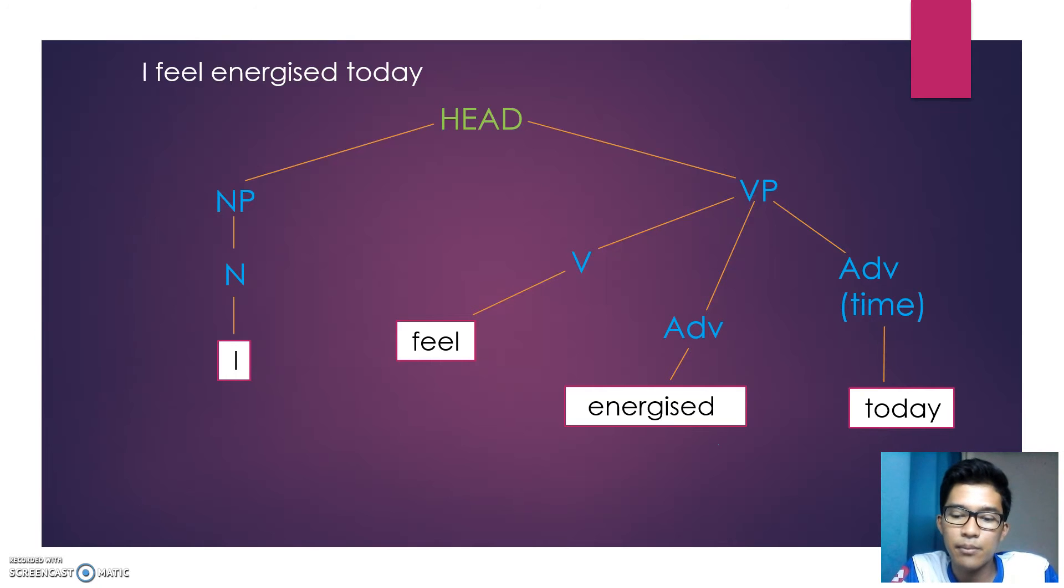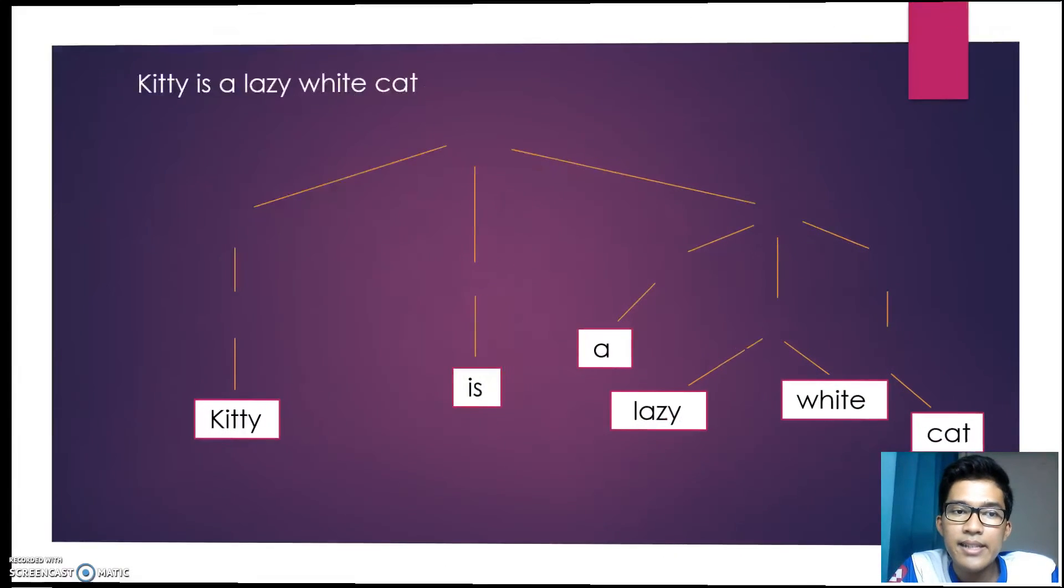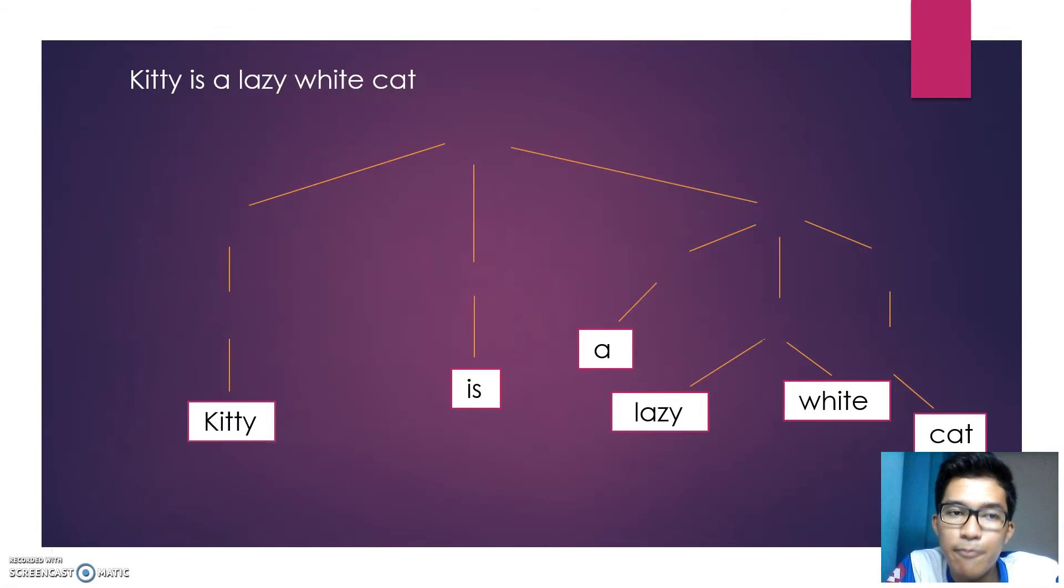Next, this is a more complex example compared to the previous example. 'Kitty is a lazy white cat.' For this example, we have the auxiliary verb which is 'is,' so we are going to use clause. We could use head if we are going to have only two constituents which are 'kitty' and 'is a lazy white cat,' but here I'm going to show you the difference, the use of the clause and the head.